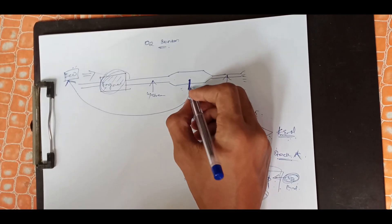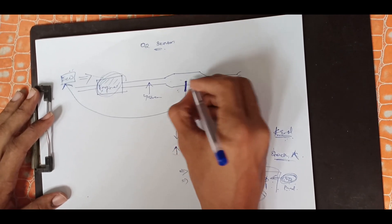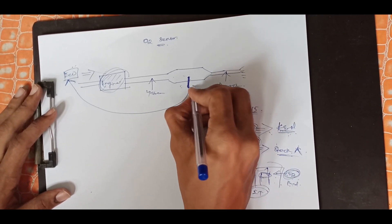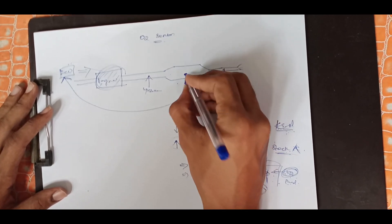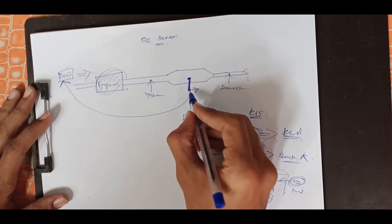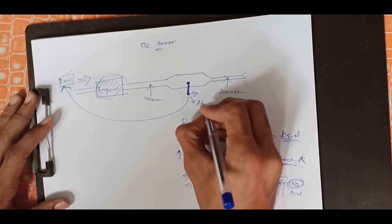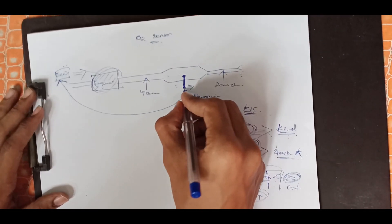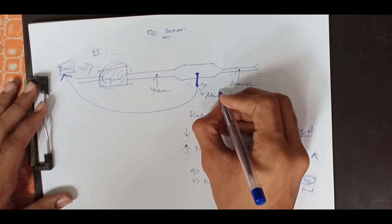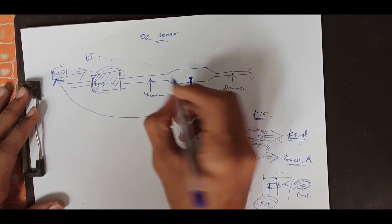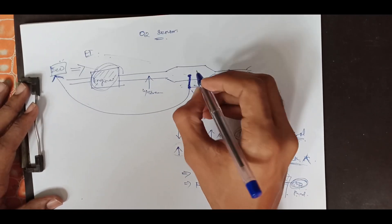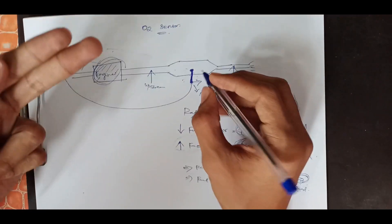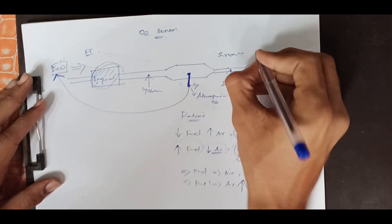Now let's go back to the topic — the O2 sensor. The O2 sensor works with the catalytic converter. There is a sensor in the middle. In the atmosphere, we are going to sense the amount of O2. When we have the amount of O2, we get the ratio. The O2 sensor is made of zirconium dioxide.